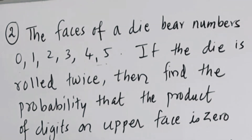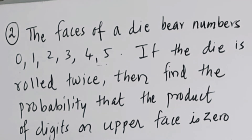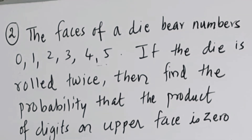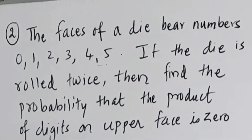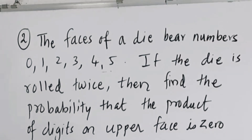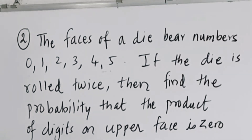Second example: the faces of the die bear numbers 0, 1, 2, 3, 4, 5. If the die is rolled twice, find the probability that the product of the digits on the uppermost face of the die is 0. So the sample space when two dice are rolled, with faces 0, 1, 2, 3, 4, 5.